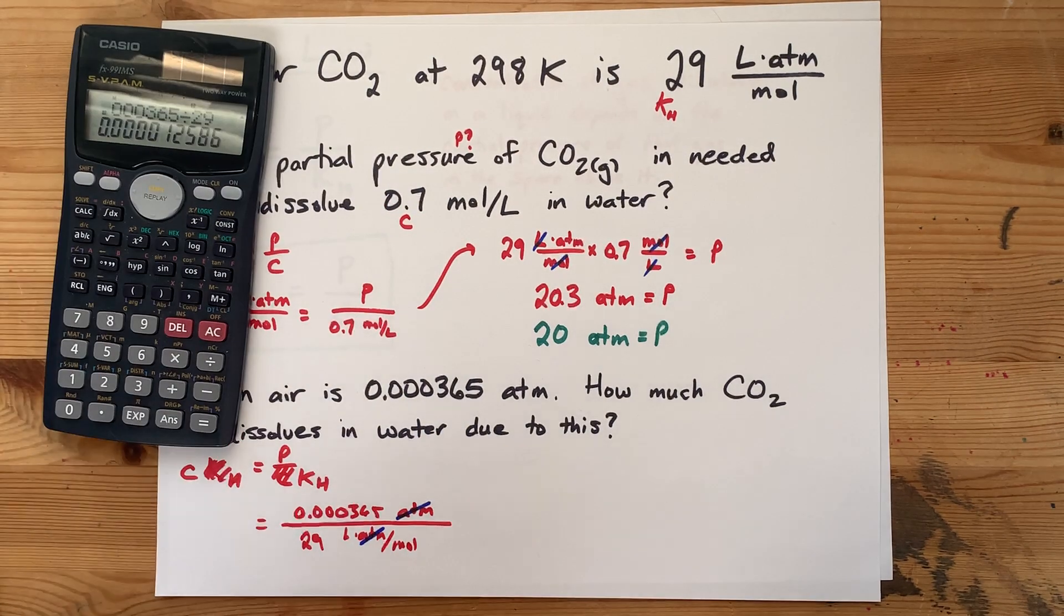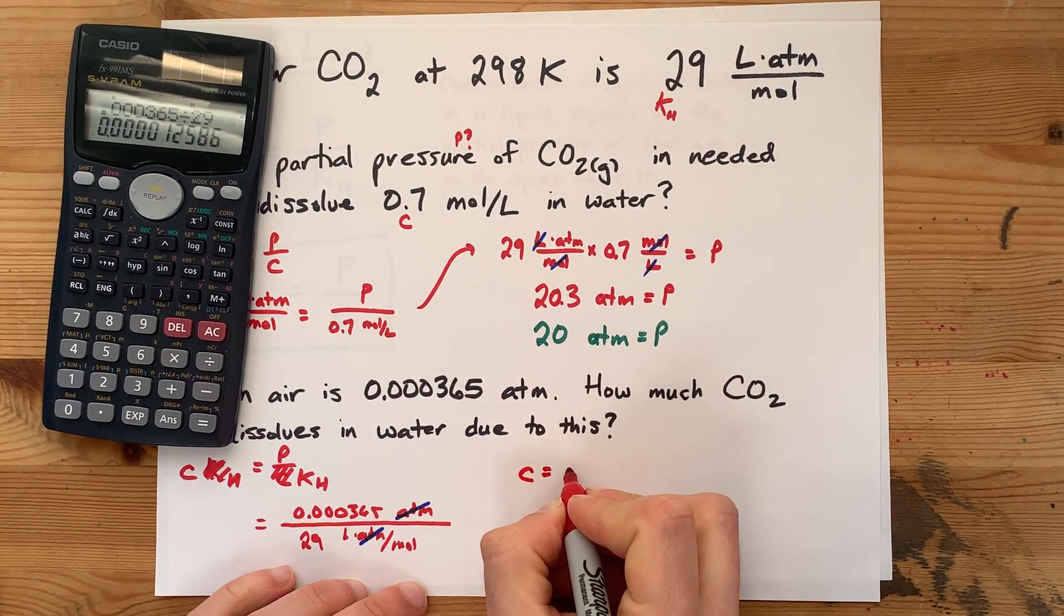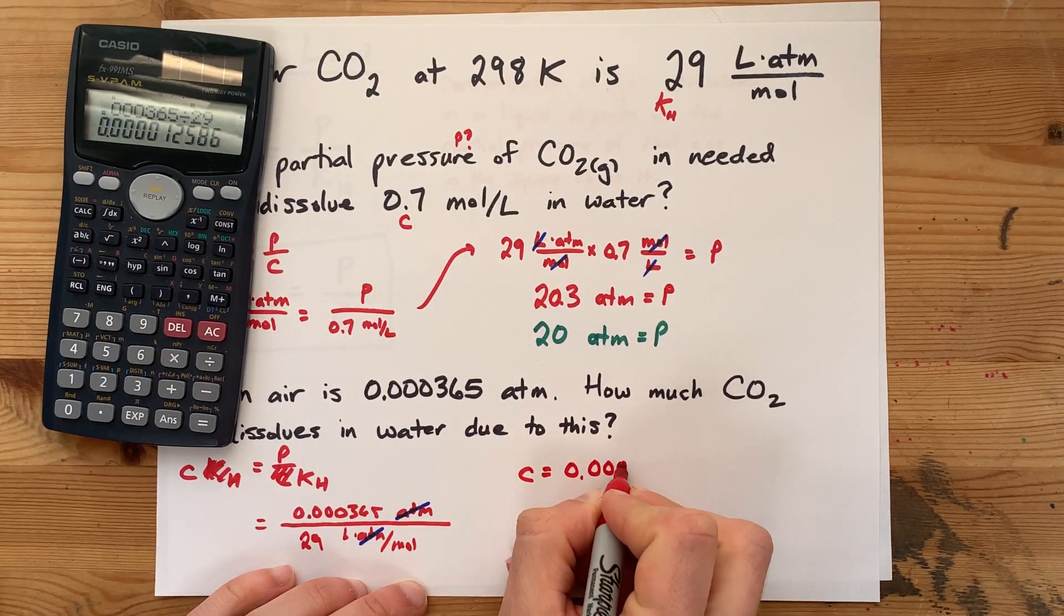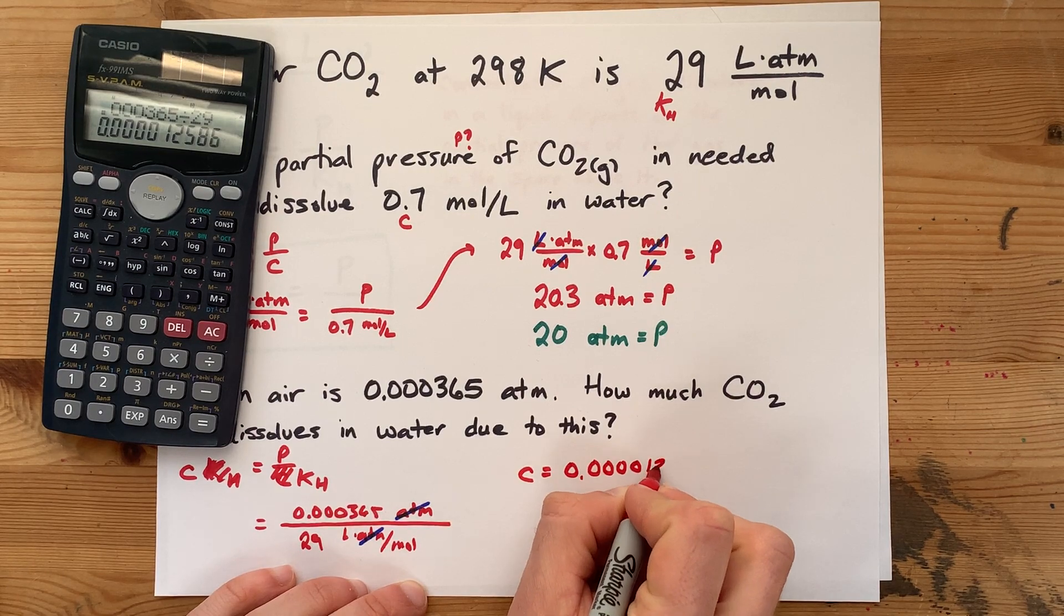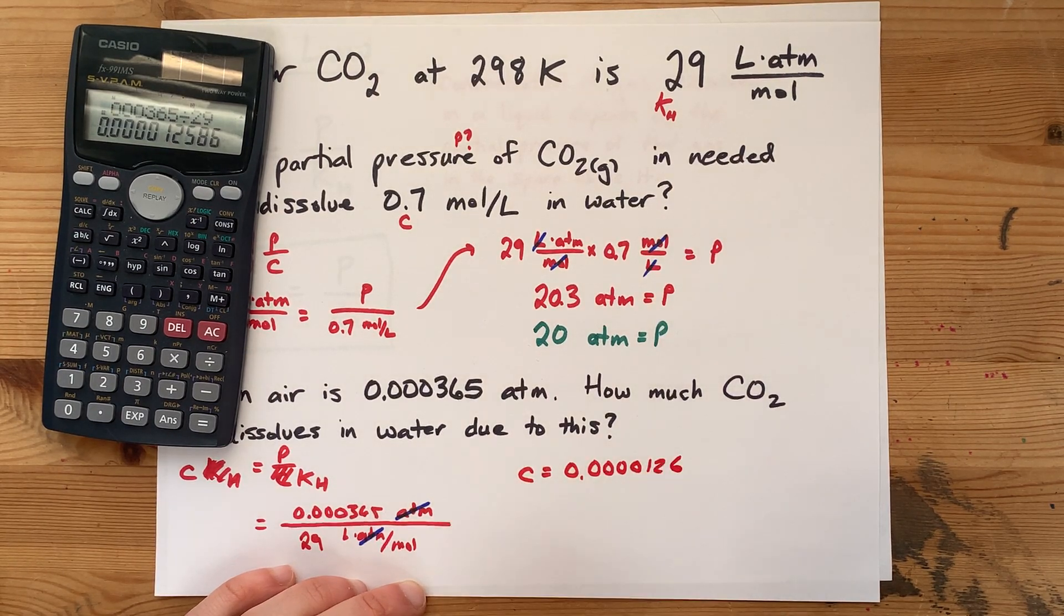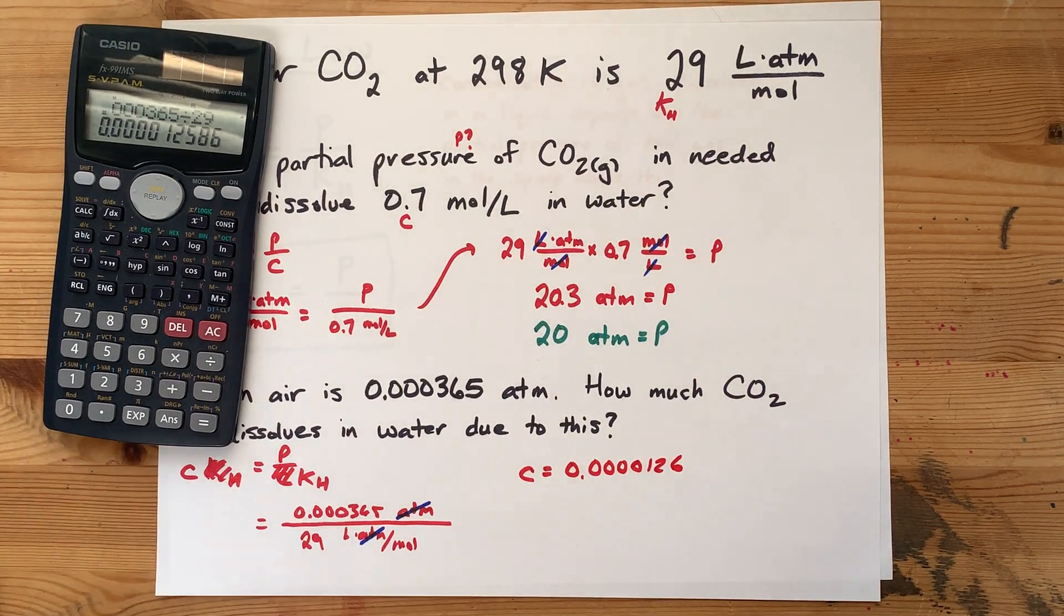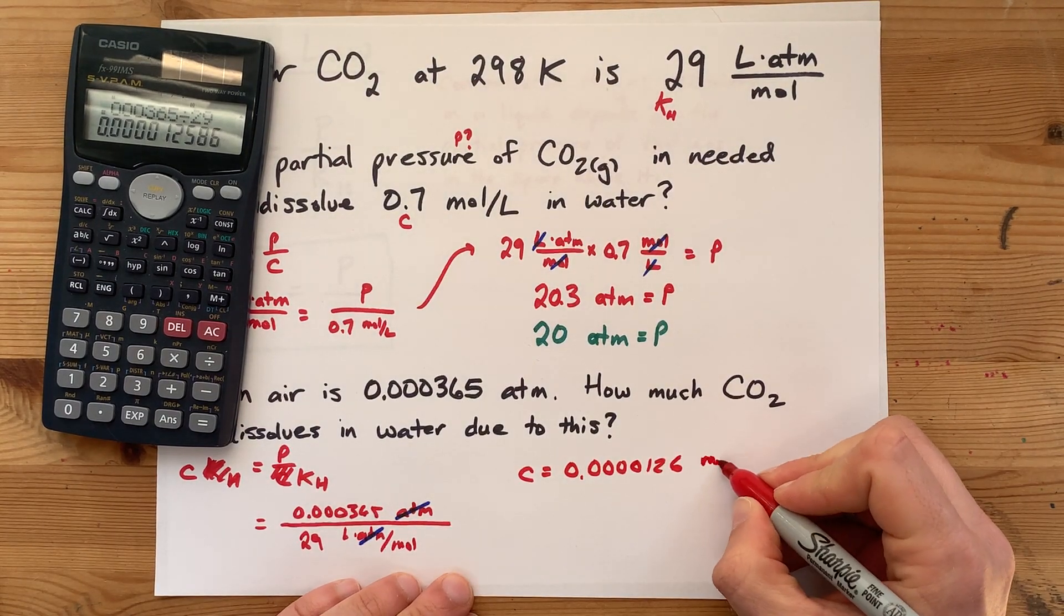0.000365 divided by 29. Oof, that's even smaller. I get a concentration of 0.0000126. Cool.